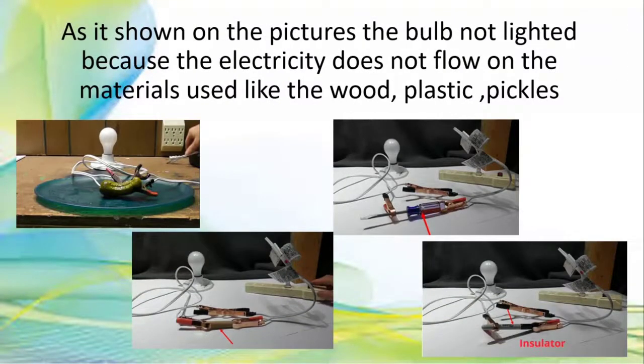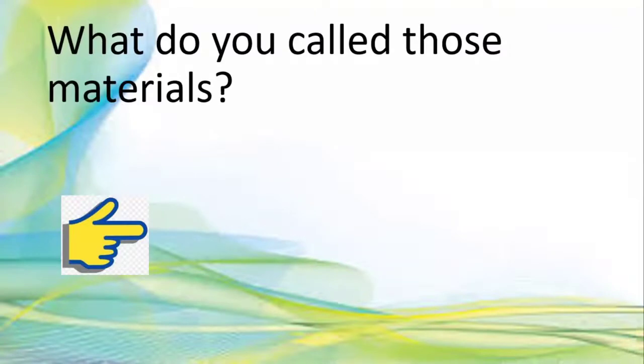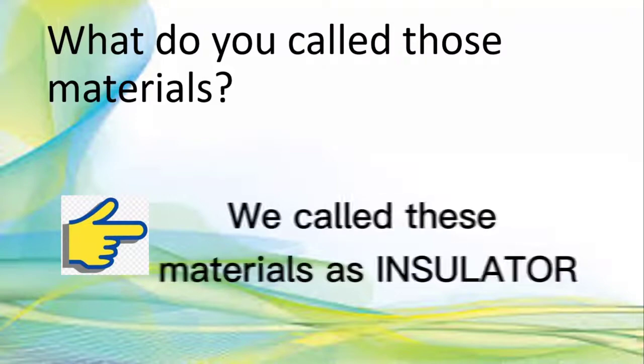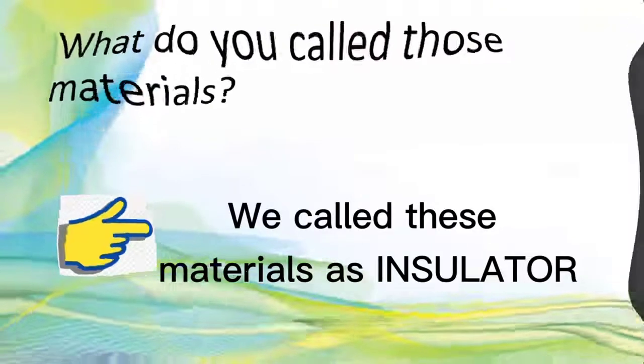As it's shown in the pictures, the bulb not lighted because the electricity does not flow on the materials used like the wood, plastic, and pickles. What do you call those materials? Good job! We call these materials as insulator.